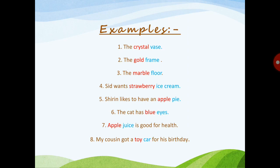'Apple juice is good for health' — what kind of juice is good for health? Apple juice. Always ask 'what kind of.' In every sentence, the red-colored word is a noun acting as an adjective and the blue one is a simple adjective. Example eight: 'My cousin got a toy car for his birthday.' Here 'toy' is the noun acting as an adjective and 'car' is just a noun.